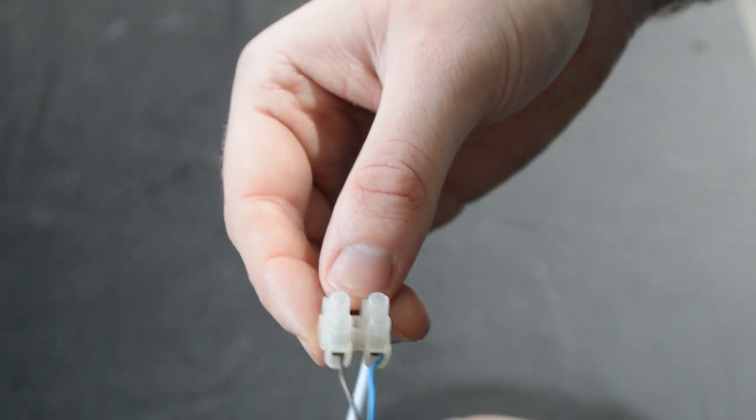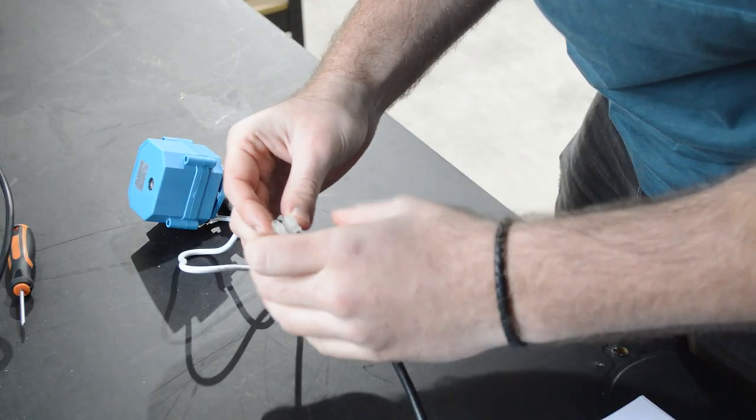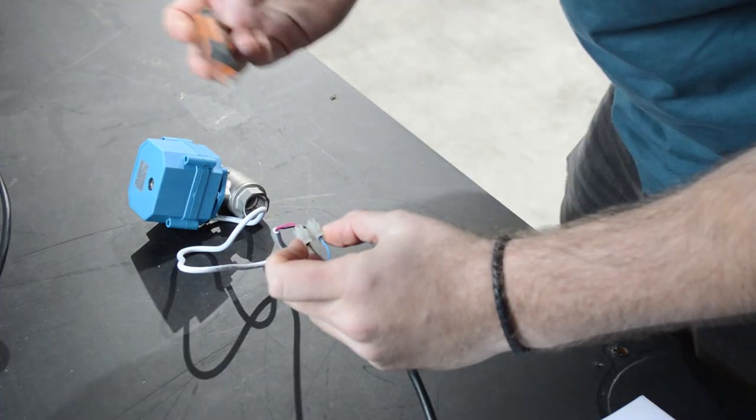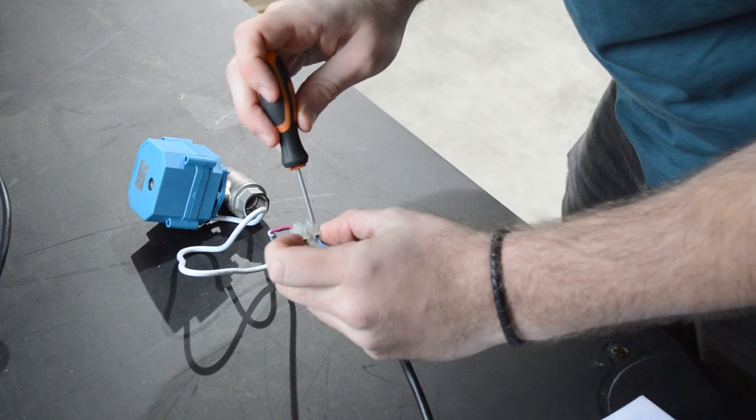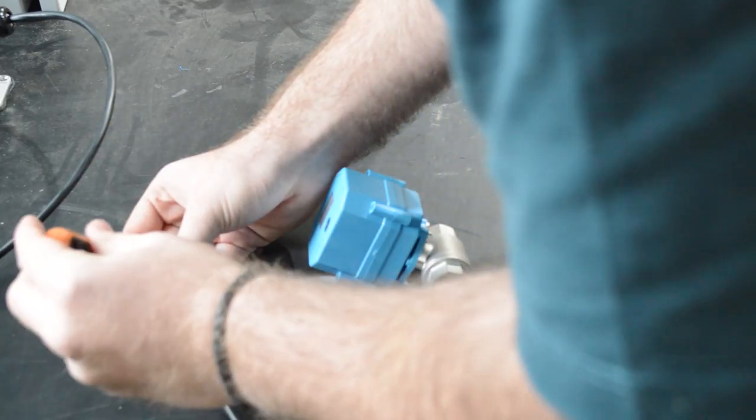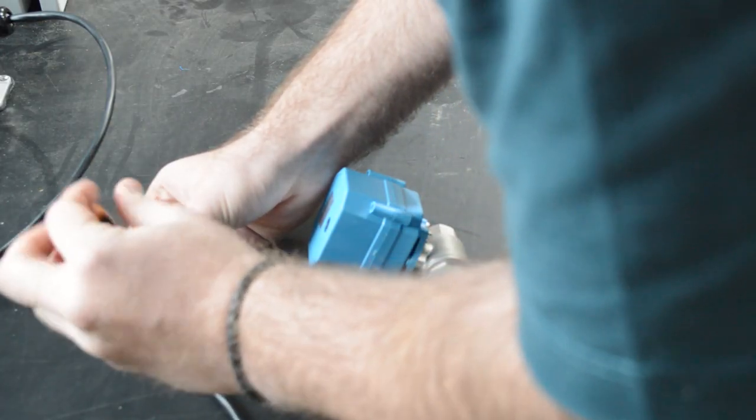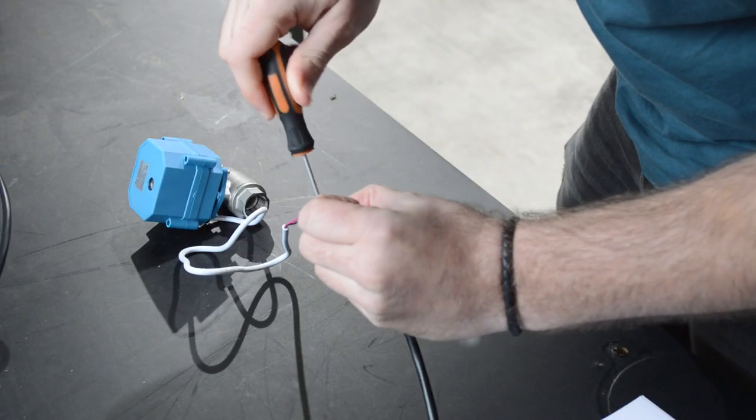Next, use a suitable manual screwdriver to securely fasten the wires, ensuring that they are securely connected and do not remain loose. Apply a bit of tension on the wires to double check that they are connected securely.